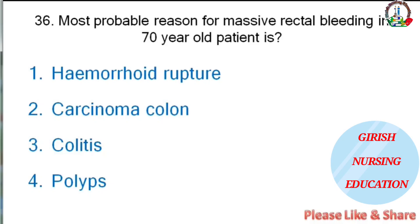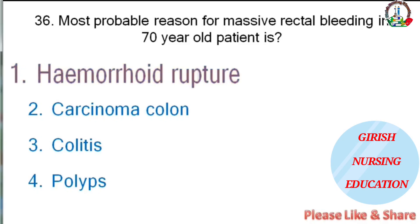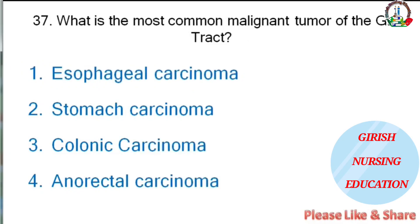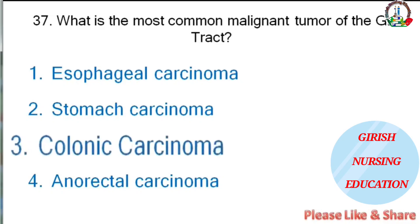Most probable reason for massive rectal bleeding in a 70-year-old patient — hemorrhoid rupture, carcinoma colon, colitis, or polyps? The correct answer is hemorrhoid rupture. Most common malignant tumor of the GI tract — esophageal carcinoma, stomach carcinoma, colonic carcinoma, or anorectal carcinoma? The correct answer is colonic carcinoma.